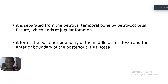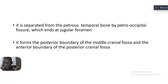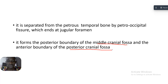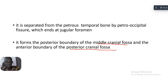The clivus is separated from the petrous temporal bone by the petro-occipital fissure, which ends at the jugular foramen. It forms the posterior boundary of the middle cranial fossa, and because the posterior cranial fossa comes after the middle cranial fossa, the clivus also forms the anterior boundary of the posterior cranial fossa.